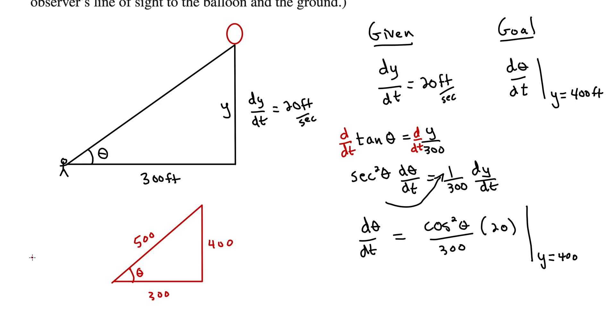So then cos theta - cos theta is adjacent over hypotenuse. That's 300 over 500 or 3 fifths. That's the final thing we needed.